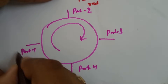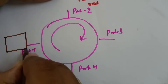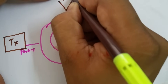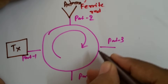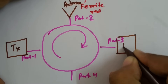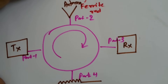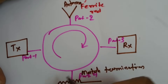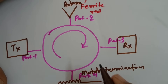To use this circulator as a duplexer, I will connect the radar transmitting circuit at port 1, the antenna at port 2, the receiving circuit at port 3, and a matched termination at port 4.